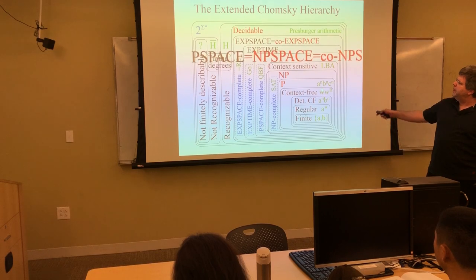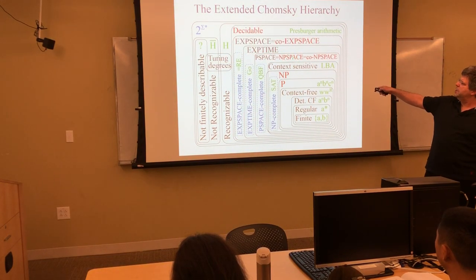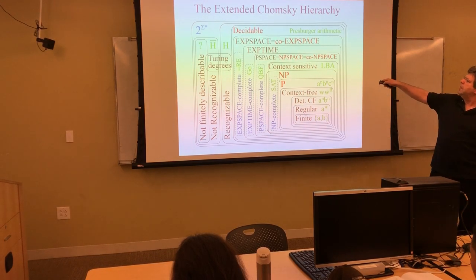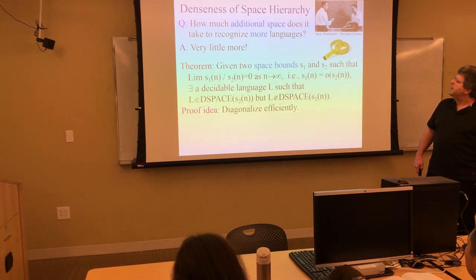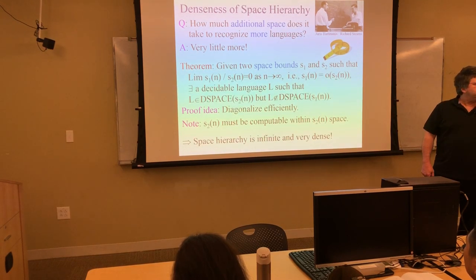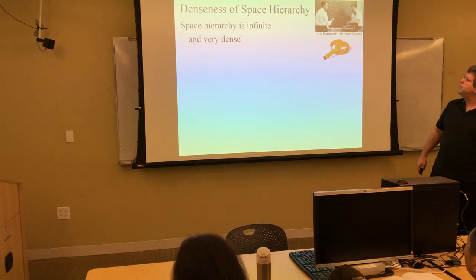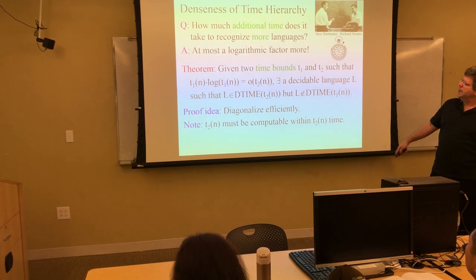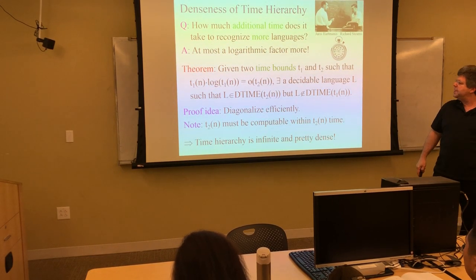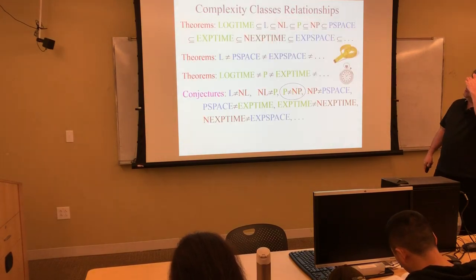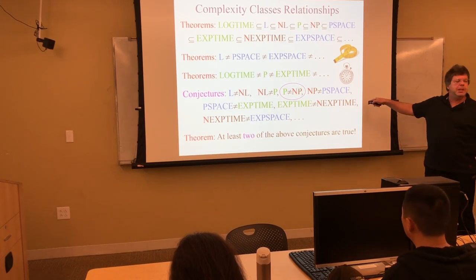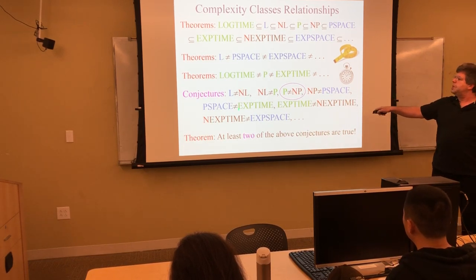In terms of the Chomsky hierarchy, we have a couple of extra classes now. Non-deterministic space equals co-non-deterministic space, and that generalizes to other categories of space. We talked about the denseness of the space hierarchy — a little bit of extra space, asymptotically speaking, is enough to get more languages. For time, it's not as tight; you need at least a log factor more time. But they're both dense hierarchies. We gave some examples of proper containments, and mentioned that there are many open problems beyond just P equals NP.